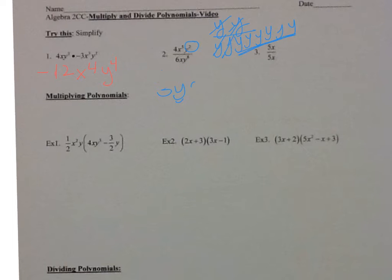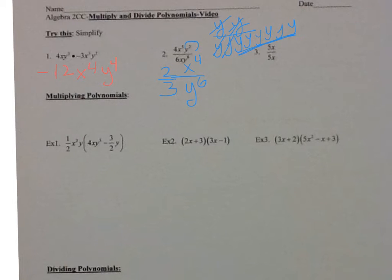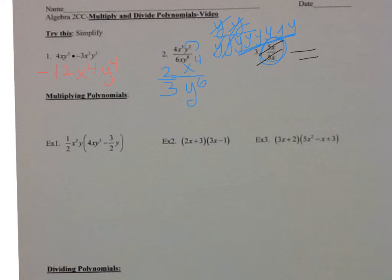Let's try that one again. So that's 2 thirds, x to the fourth in the numerator, and y to the sixth in the denominator. For the last one: 5x divided by 5x. Remember, anything divided by itself is equal to 1. A lot of students say they cancel each other out so you get 0 — that's not true. When you say cancel, you're saying 0, but it's not 0. Anything divided by itself is equal to 1.